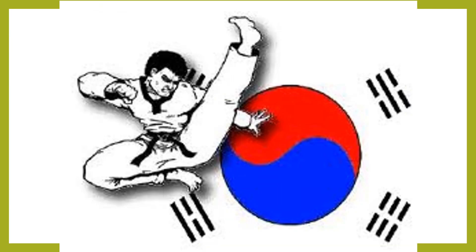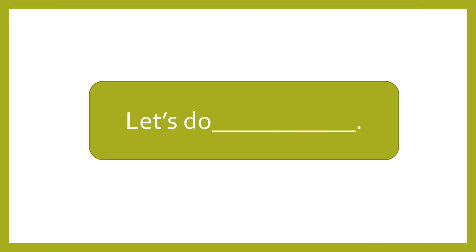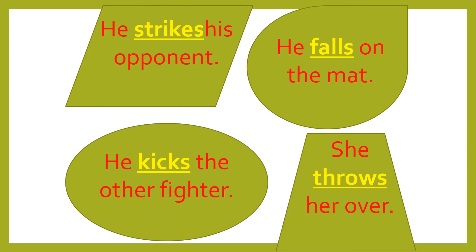Taekwondo — one of Korea's national sports, now practiced all around the world from Africa to America to South America and all over Asia. It's one of the most popular martial arts. Let's do taekwondo. He strikes his opponent — that means to hit. Strike below the belt is bad, remember. He falls on the mat. He kicks the other fighter. She throws her over — throwing is very important in taekwondo.